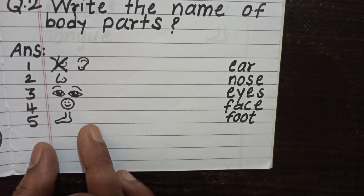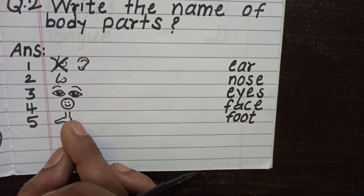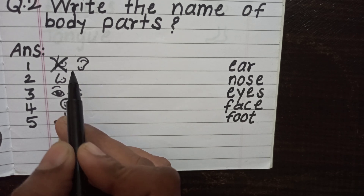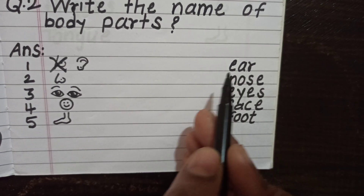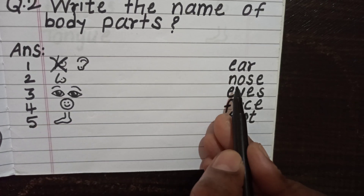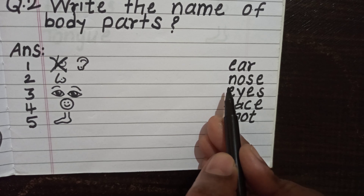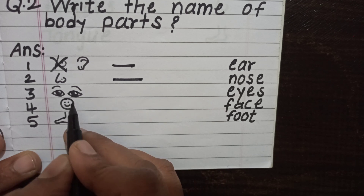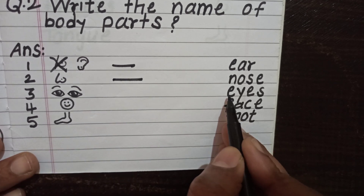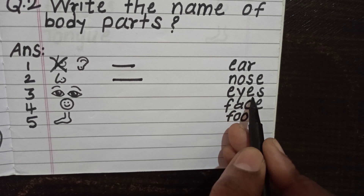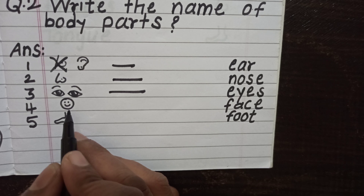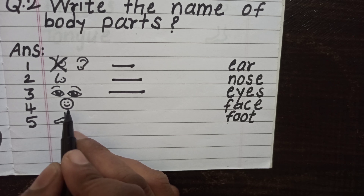Seeing these pictures, you should write their names. Ear — spelling E-A-R. Then nose — N-O-S-E, nose. Third one, eyes — E-Y-E-S, eyes. Then face. Your teacher can give you this type of picture and you write the name.